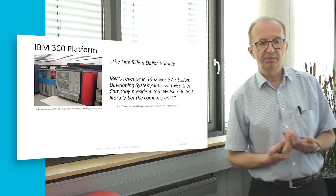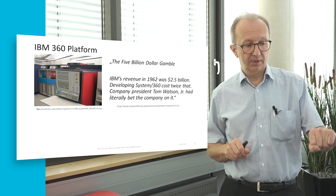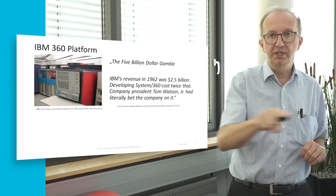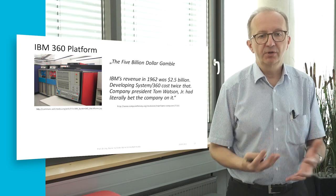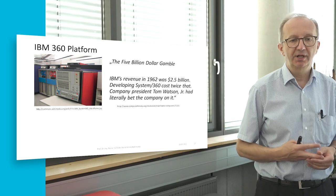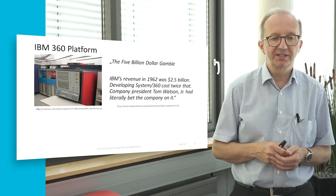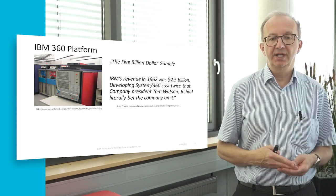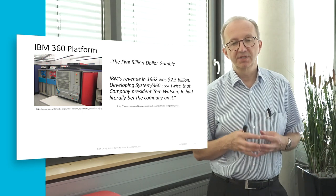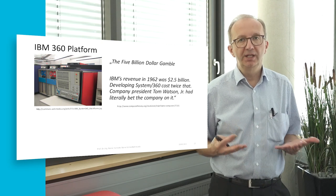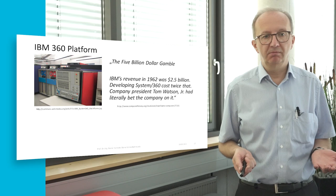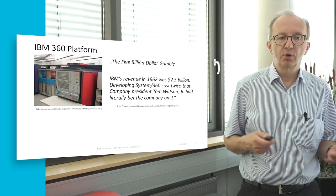The idea of the IBM 360 platform was to have a series of computers and central processing units that scale up, with a matching series of printers, hard disks, and everything fitting together. So that was one of the first intentionally developed innovation platforms. This was a very high-risk endeavor — IBM's revenue in 1962 was 2.5 billion dollars, and developing the IBM 360 cost twice that revenue. It was really a bet on the company, but it was very successful, and the quasi-monopoly of IBM in the 1960s and 1970s was created by this investment.